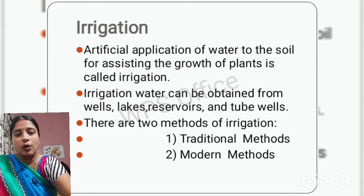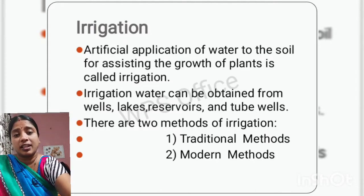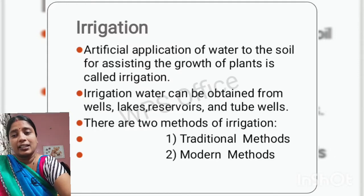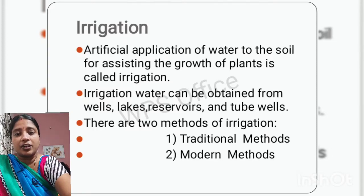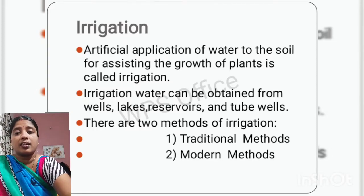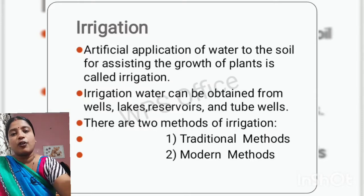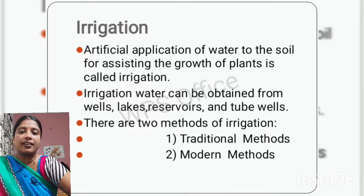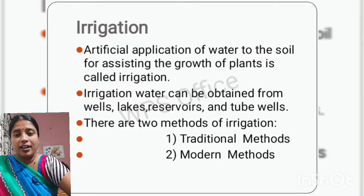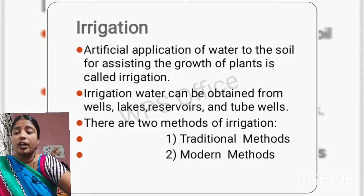To take water from these sources and provide it to the plants, there are two methods. In olden times, the methods used for irrigation were considered traditional methods — the methods we have been following since long. And nowadays, the methods that we use are modern methods.